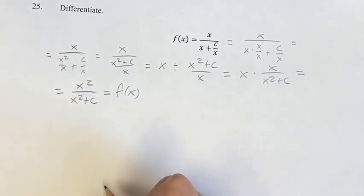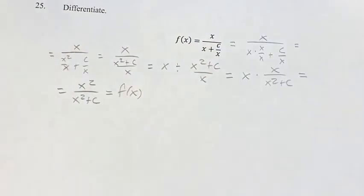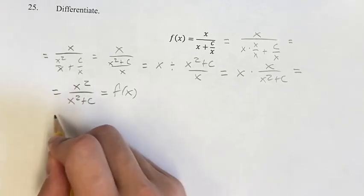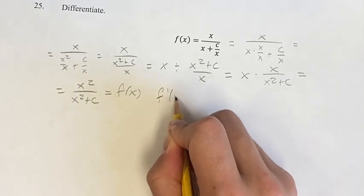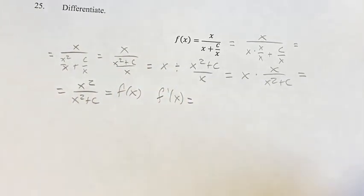And this, it's easier to find the derivative of than this. Because with this fraction within a fraction, you'd have a quotient rule within a quotient rule, which can get complicated. But anyways, we have the derivative. Using the quotient rule now, with this fraction,